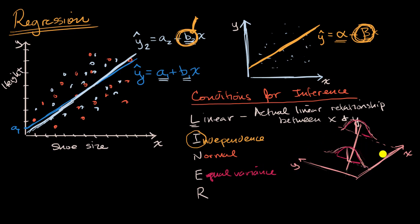So for example, if for a given x, let's say for this x, all of a sudden you had a much lower variance, maybe it looked like this, then you would no longer meet your conditions for inference.